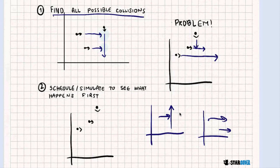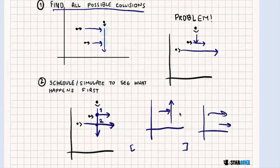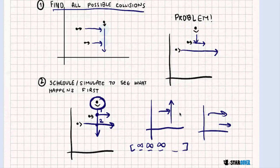We're going to find all possible collisions and then simulate. We'll keep a list containing the time that each cow stops. For every cow, we're going to have a time, and at first these times are just going to be infinity. Then we're going to look at the first collision. What happens is the north cow is going to stop, so we're going to replace this north cow's time with 1, because it collides at time 1.